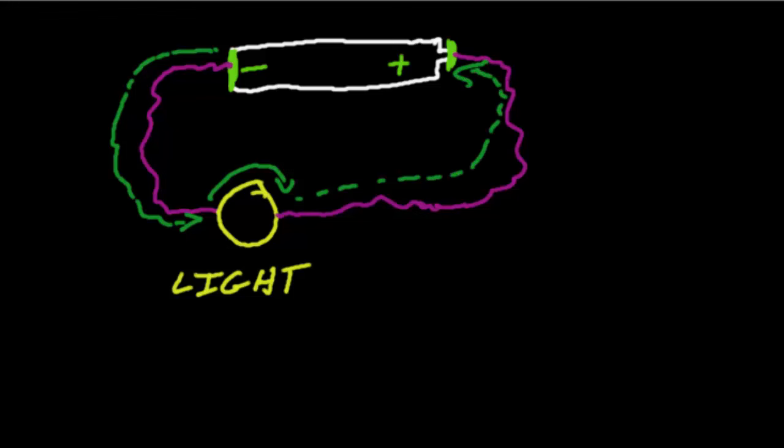And that is called a closed circuit. It's going to work because the two terminals are connected by this wire and light bulb path. Therefore the light bulb will light up.